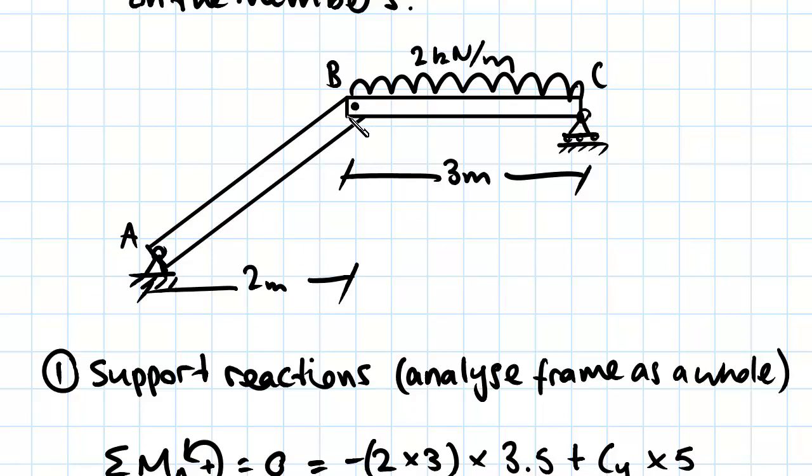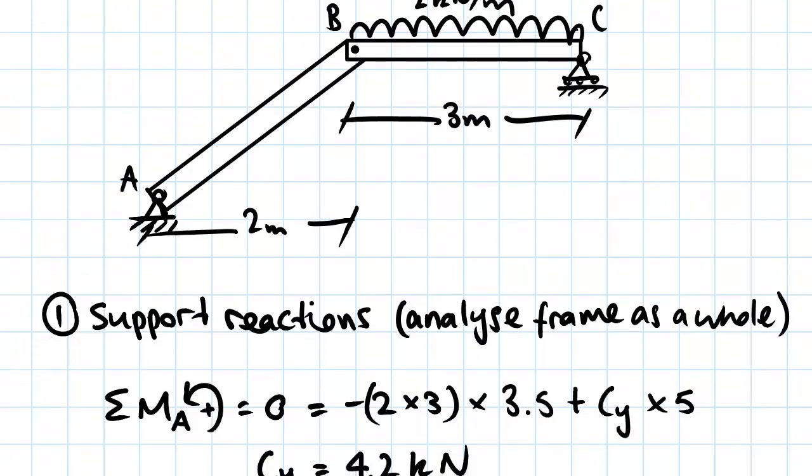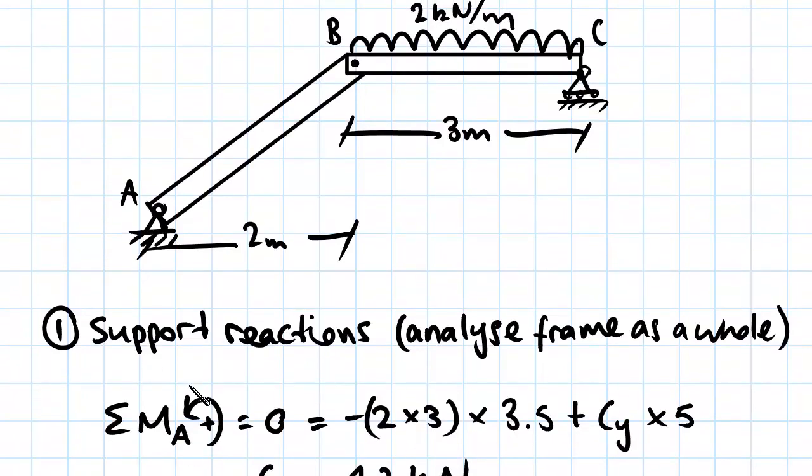So working out the support reactions, first of all we took moments about A. So moments about point A let that equal to zero, because it's a pin joint it can't support a moment, so this is always going to be true. Now taking anti-clockwise as positive, we have negative 2 times 3, so that's 2 times the distance that acts over.